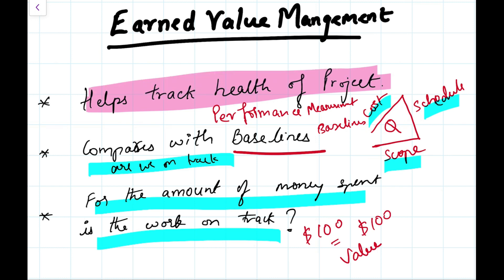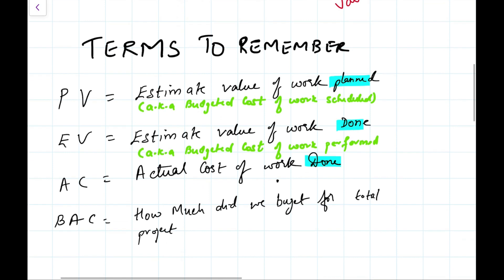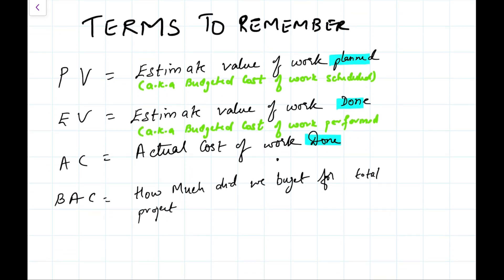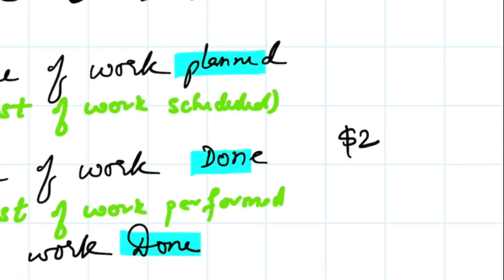There are some important terms you need to know for earned value management. PV is planned value, EV is earned value, AC is actual cost, and BAC is budget at completion. Planned value is the estimated value of the work planned — also known as the budgeted cost of work scheduled. For example, if you plan two days of work at $200, the planned value is $200. Earned value is the estimated value of the work actually done.